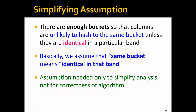Next, let's start to analyze LSH. To do this, let's first make a simplifying assumption: there are enough buckets so that columns are unlikely to hash to the same bucket unless they are identical in a particular band. This basically assumes there will be no collision for each hash function — the same bucket means identical in that band. Note that this assumption is needed only to simplify the analysis, not for the correctness of the algorithm.